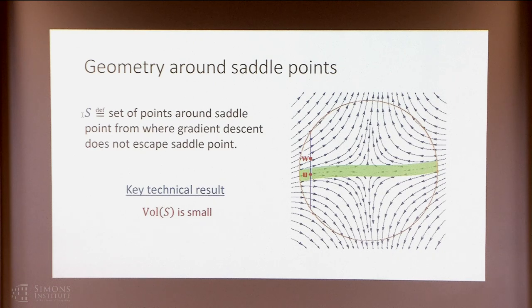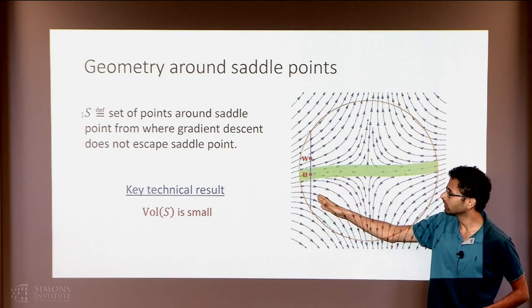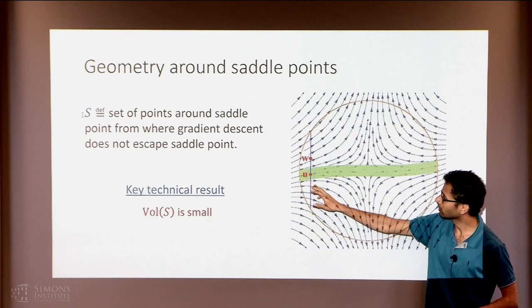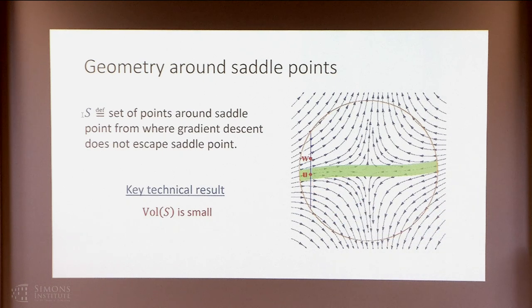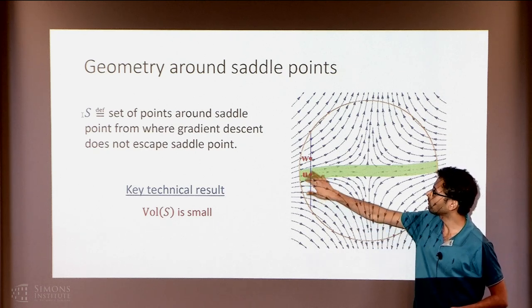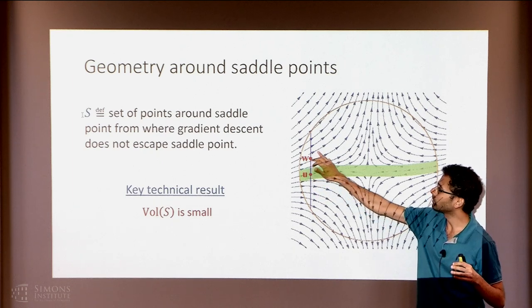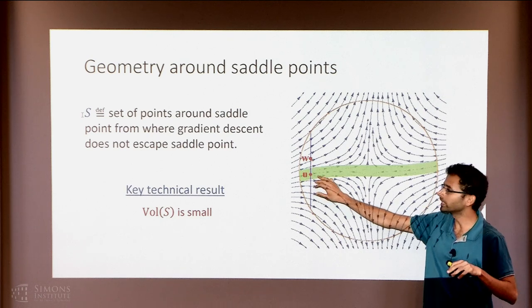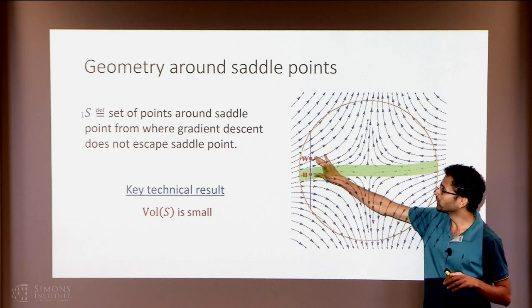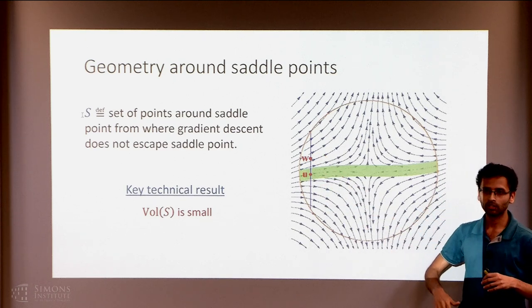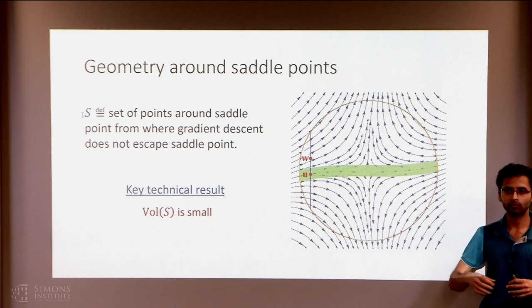Do you have to worry about over-counting? There is no real over-counting, because what we show is that you can divide this ball into all lines along the negative eigendirection. Each line intersects the set S in a very thin portion. The intuition is that u and w are separated only by the negative eigendirection. You can write the gradient descent update at w as the gradient descent update at u plus updates that follow from this difference, and this difference diverges because it's in the negative eigendirection, so w actually escapes.